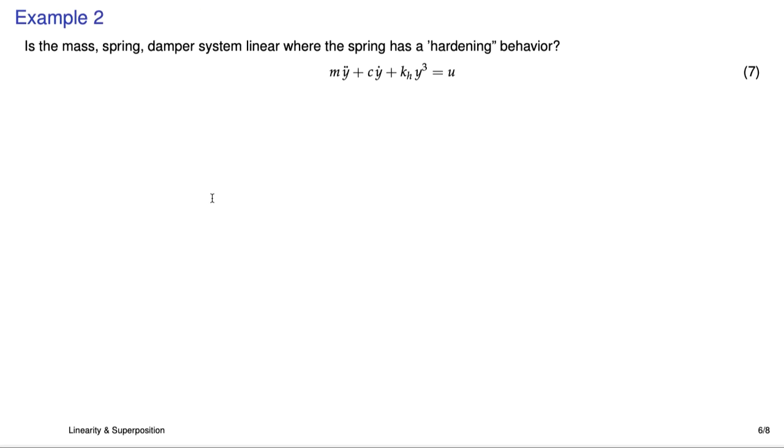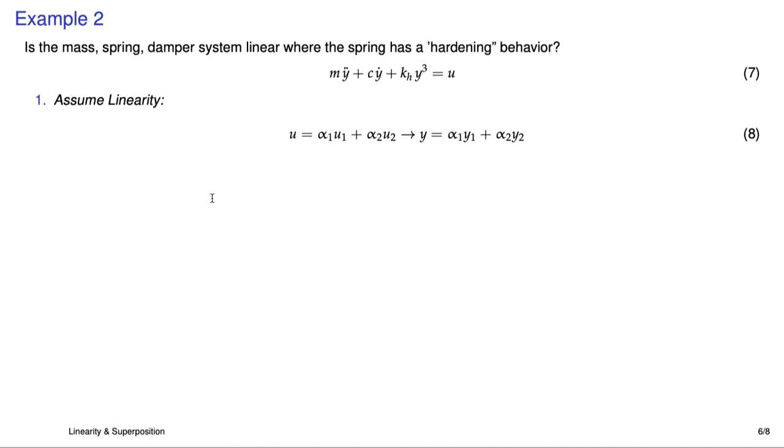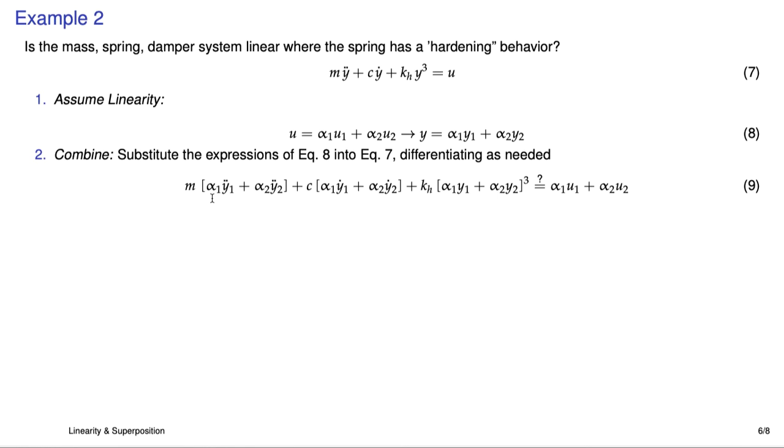Now, let's look at another case. It's the mass spring damper system again, but now it has a hardening spring. That's the KH times Y cubed. We'll go through the same steps. Linearity, we assume. We substitute those expressions in 8 back into 7, taking a couple derivatives as needed, and we get this expression. And it looks pretty much like the previous one, except we have this nasty-looking quantity in square brackets to the third power. You can imagine that's going to cause us some heartburn in just a minute. Well, pretty much right now.